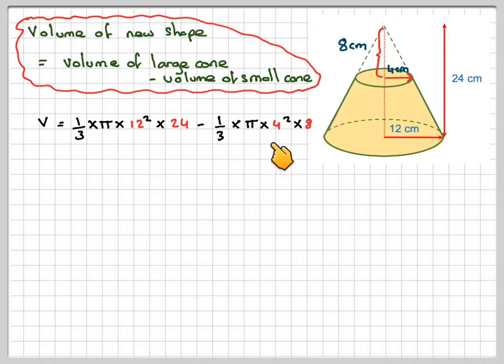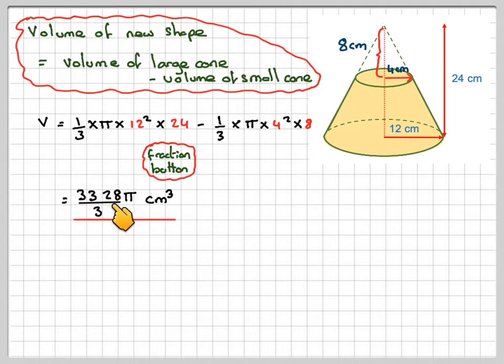Now we can do this all in one go on our calculator. We just make sure that we use the fraction button and use the π button. And it will give you an answer of 3328 over 3 times π cm³. You should try to avoid decimals at all costs in this type of question. And we were asked to give the exact answer so we can leave π in our answer.